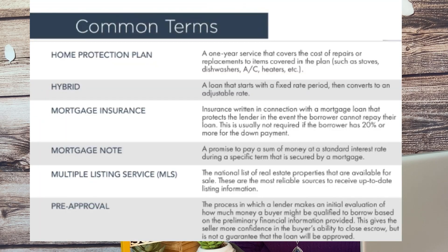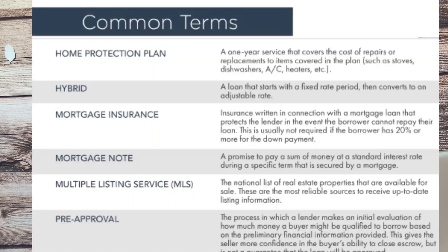Mortgage Note: A promise to pay a sum of money at a standard interest rate during a specific term, secured by a mortgage. Multiple Listing Service (MLS): The national list of real estate properties available for sale. These are the most reliable sources for up-to-date listing information. A realtor will be a member of their local MLS — I belong to CR MLS, and that's where I draw information for what houses are available and what's pending.